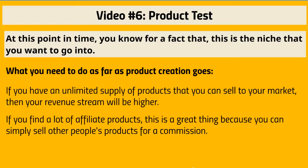If you create your own product, obviously you get 100% commission — you are the vendor. That's the nice thing about owning products, but product creation definitely does take time. A shortcut to that is what we call private label rights products. That means you have somebody who has created a video course, report, ebook, or some sort of product, and they are giving you the rights to put your name on it and make it your own.